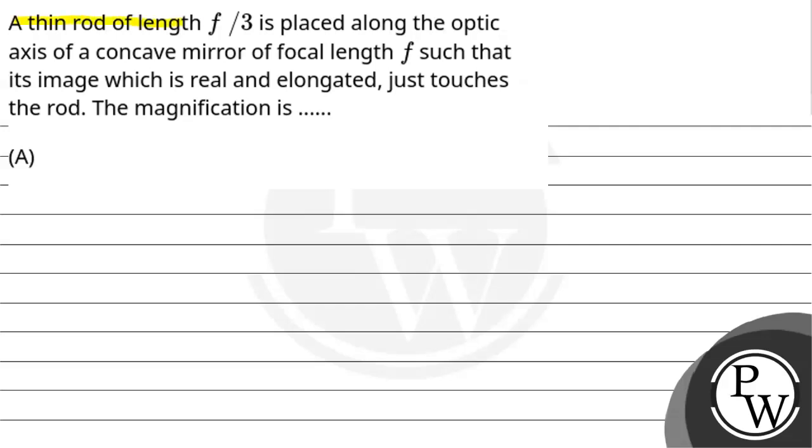Hello, let us read this question. A thin rod of length f by 3 is placed along the optic axis of a concave mirror of focal length f such that its image which is real and elongated just touches the rod. The magnification is.